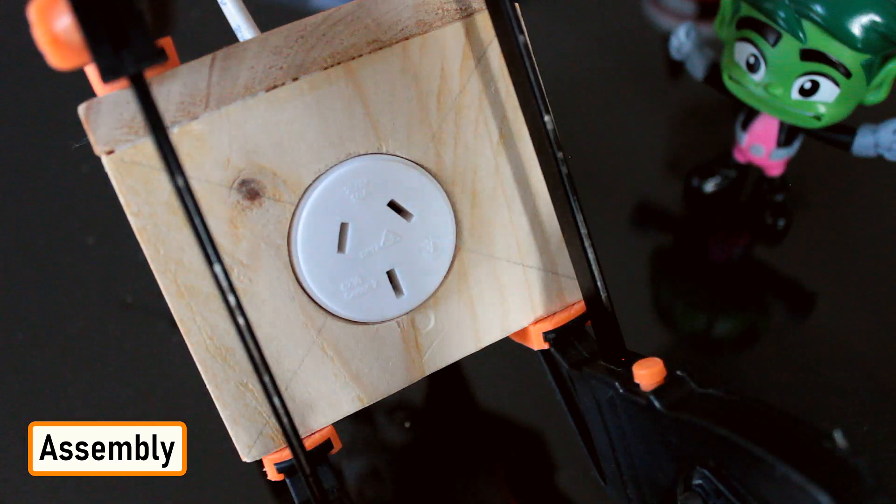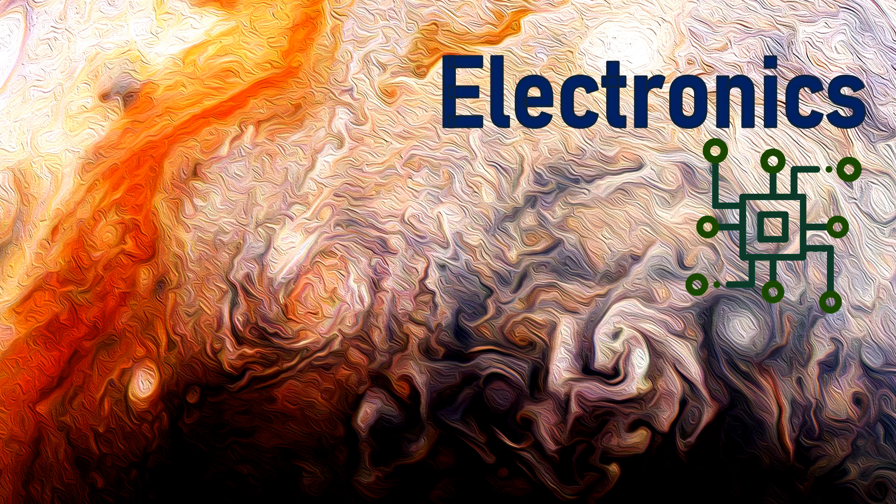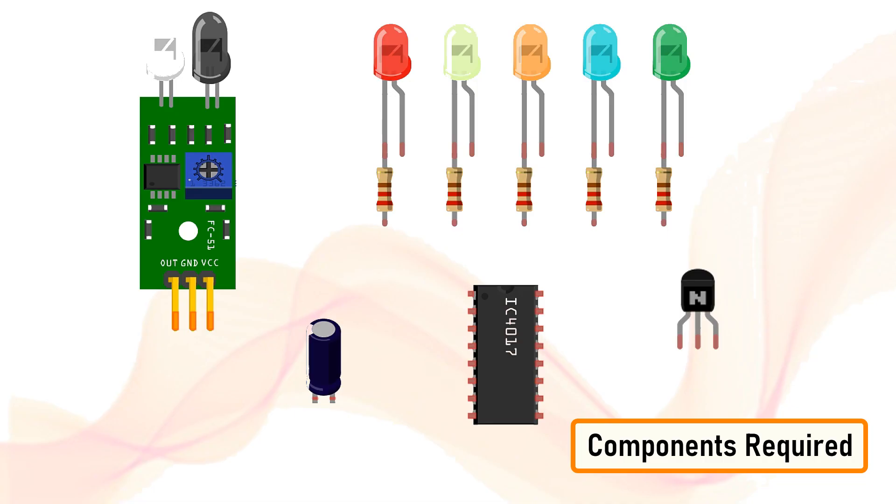Alright, now let's look at the electronics bit. For the electronics bit we need one IR sensor, five colored LEDs, five 220 ohm resistors, one 10 microfarad capacitor, five NPN transistors, and a 4017 IC.